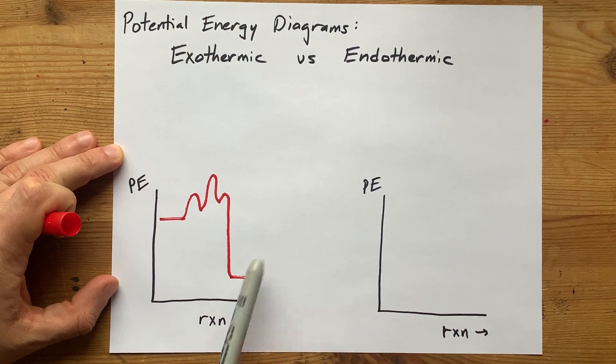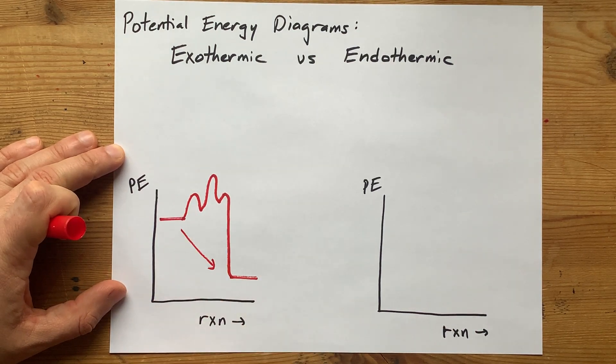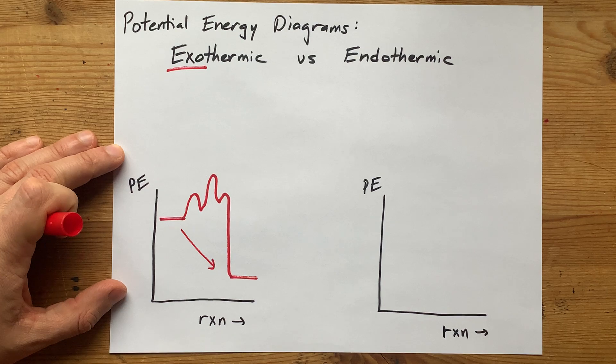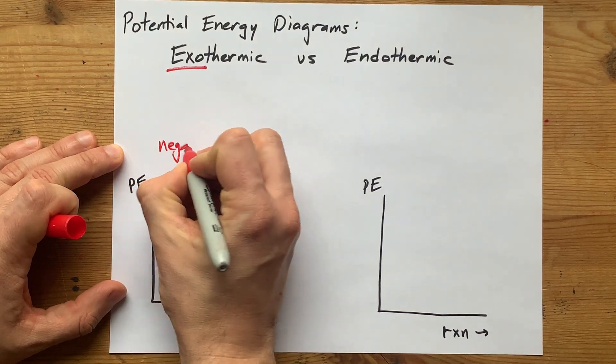That means to get to the products, you are releasing energy - exothermic, negative delta H.